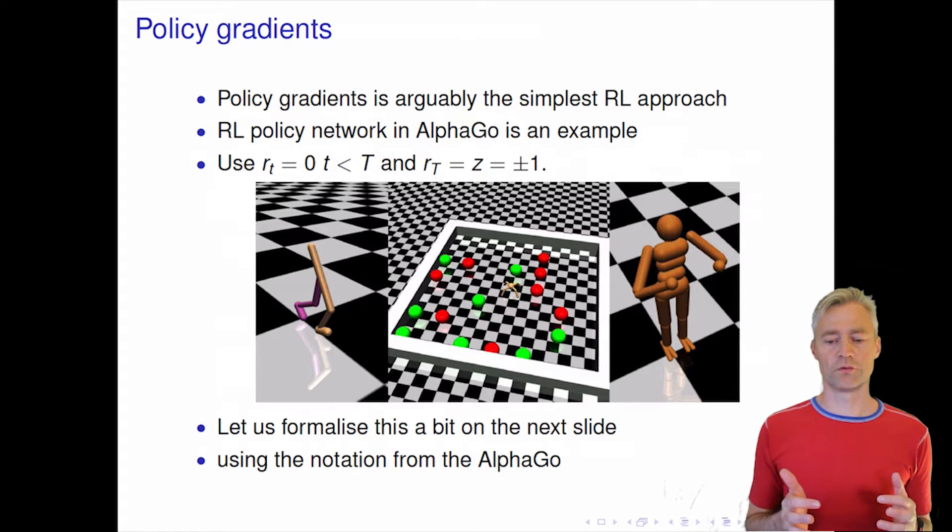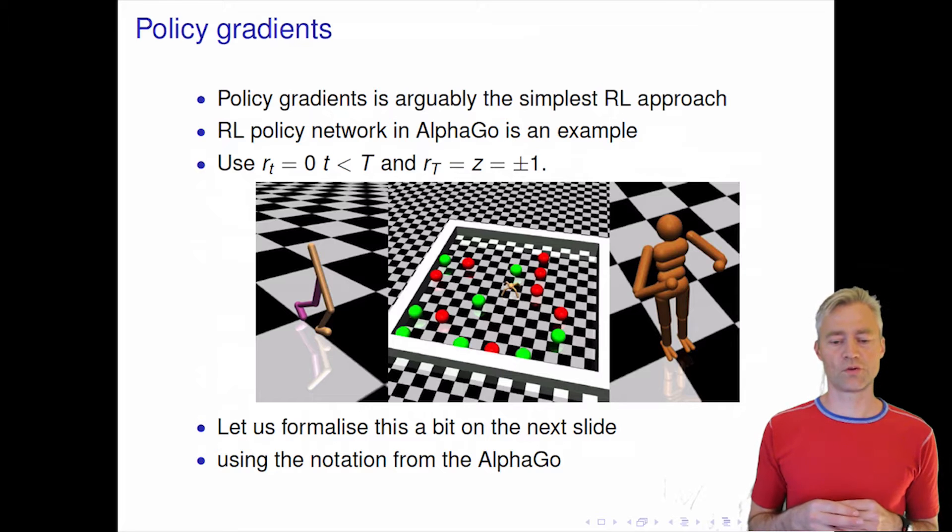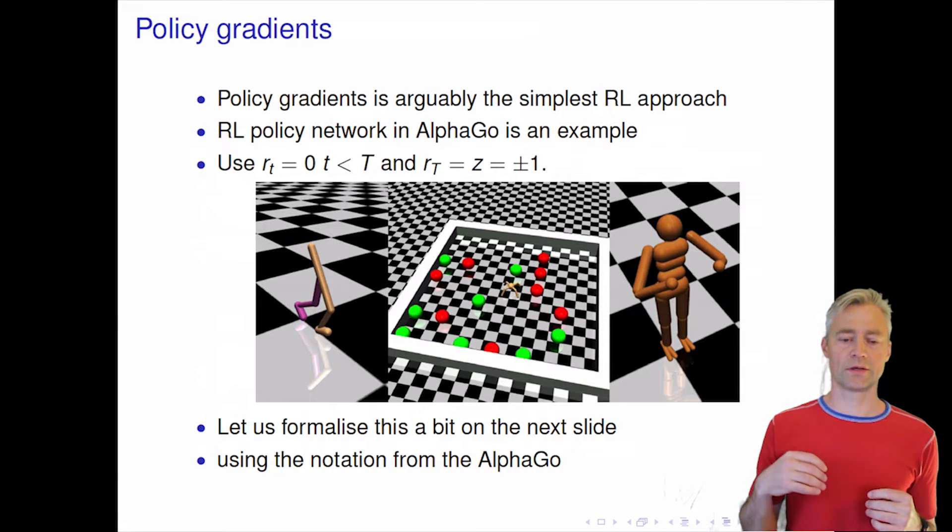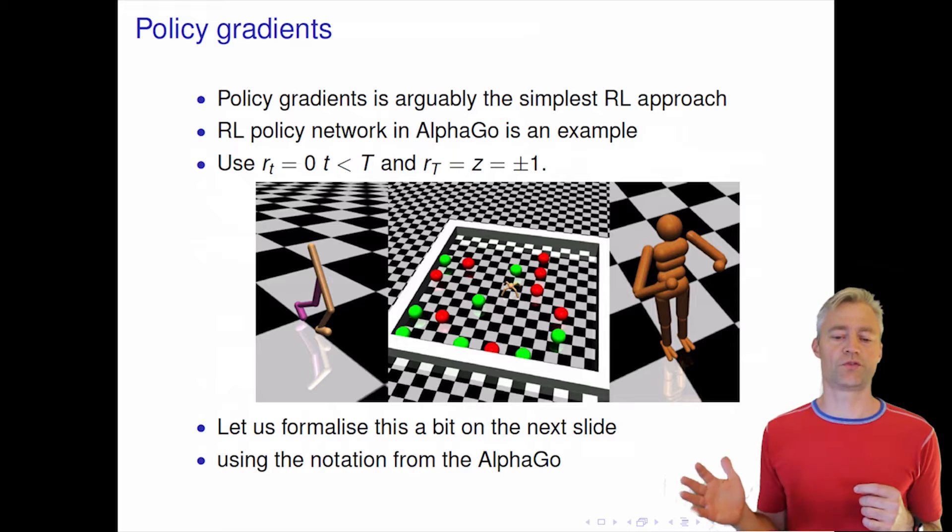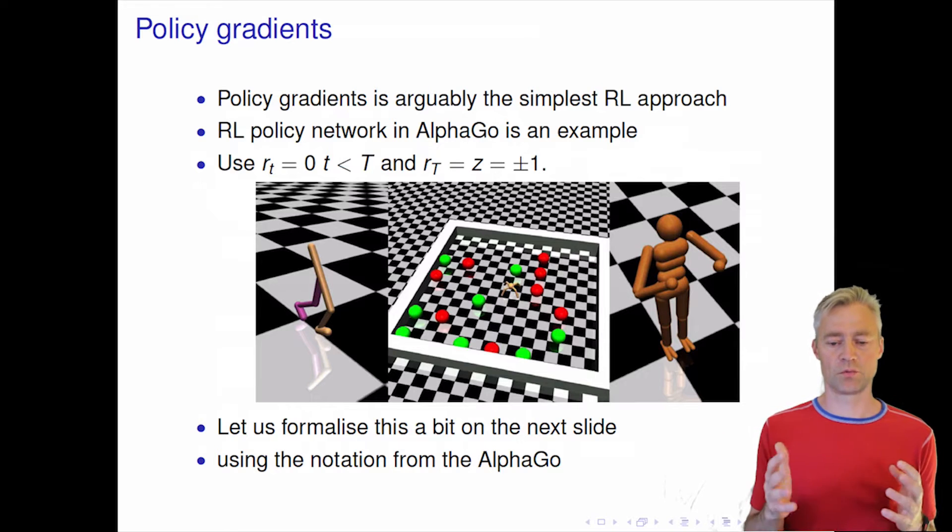For the Go game, we have this situation that we only get a reward when the game terminates. So all the steps up to capital T where the game terminates, the reward is zero. This is like a formal illustration of this.